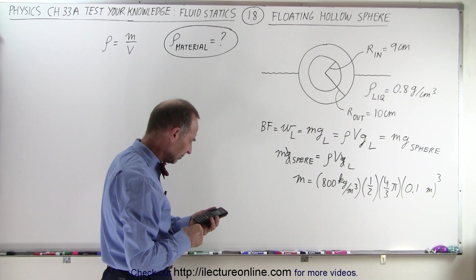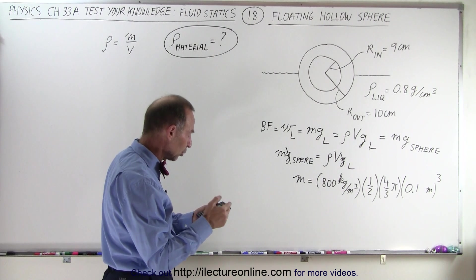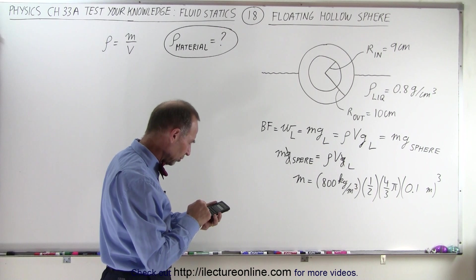Times pi equals... I better do that one again. Okay, 800 times 0.1 cubed, that would be 0.8. Half of 4, that would be 2, times 2, divided by 3, and then times pi.